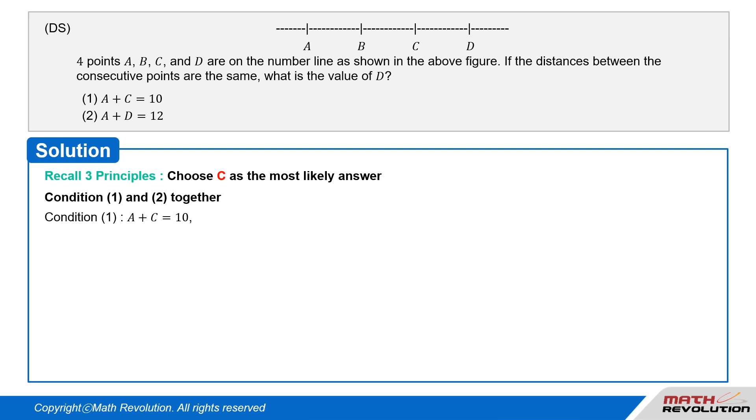Condition 1 tells us that A plus C equals 10. Substituting A plus 2 times x for C gives us A plus A plus 2 times x equals 10. Combining like terms gives us 2 times A plus 2 times x equals 10.